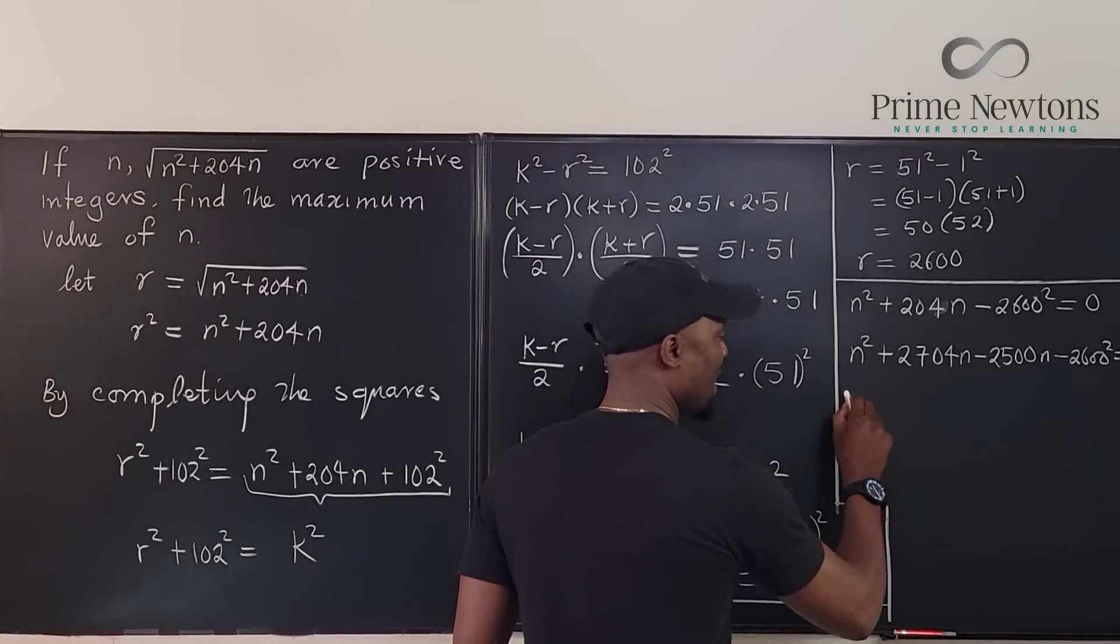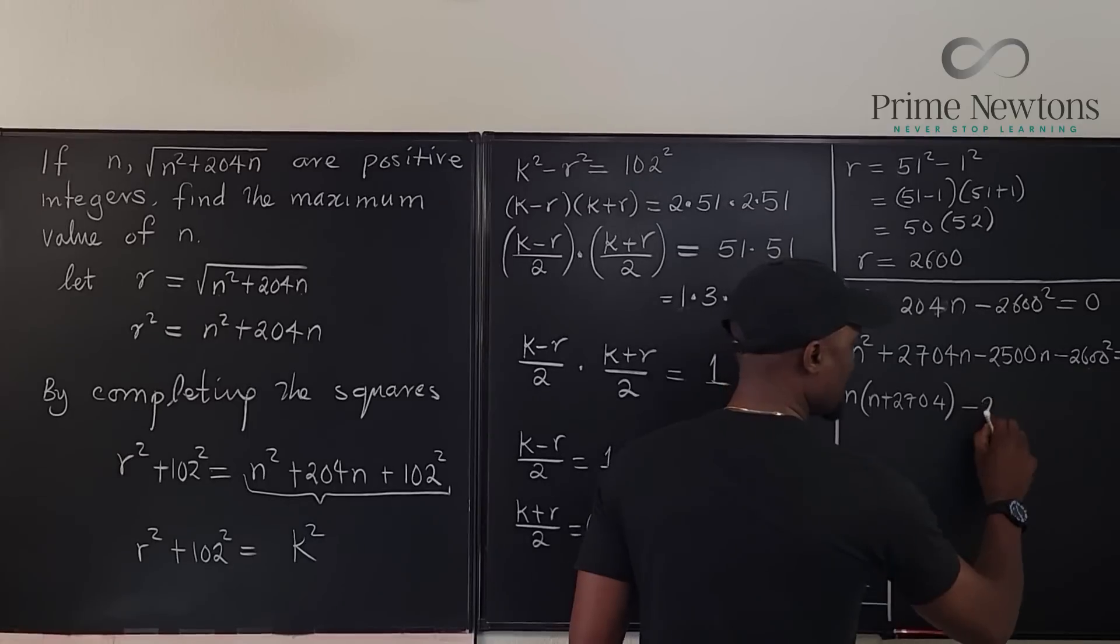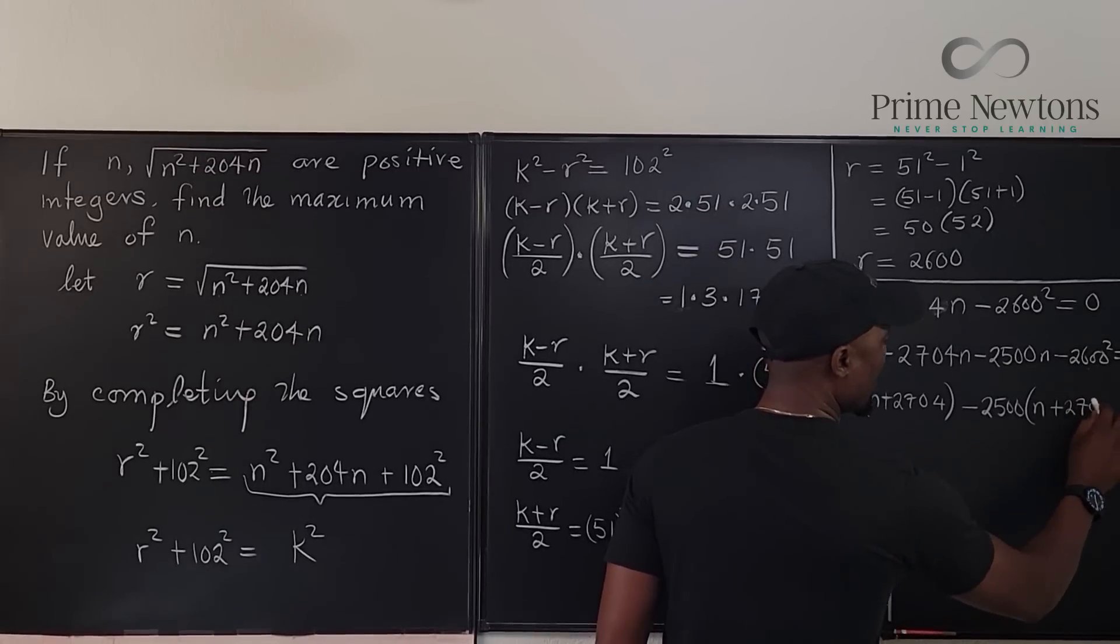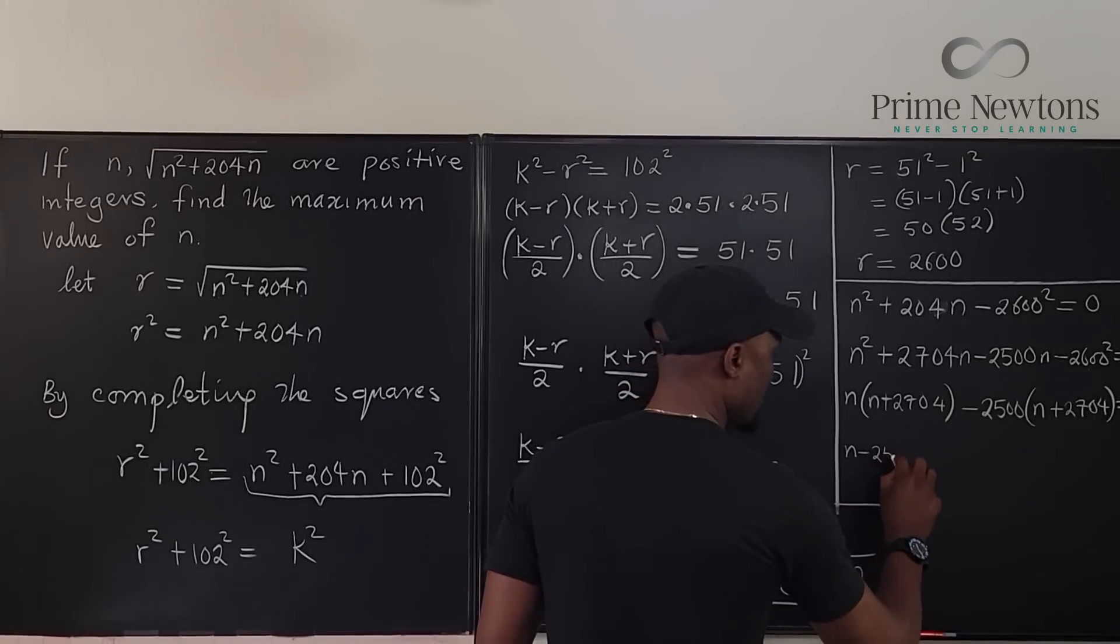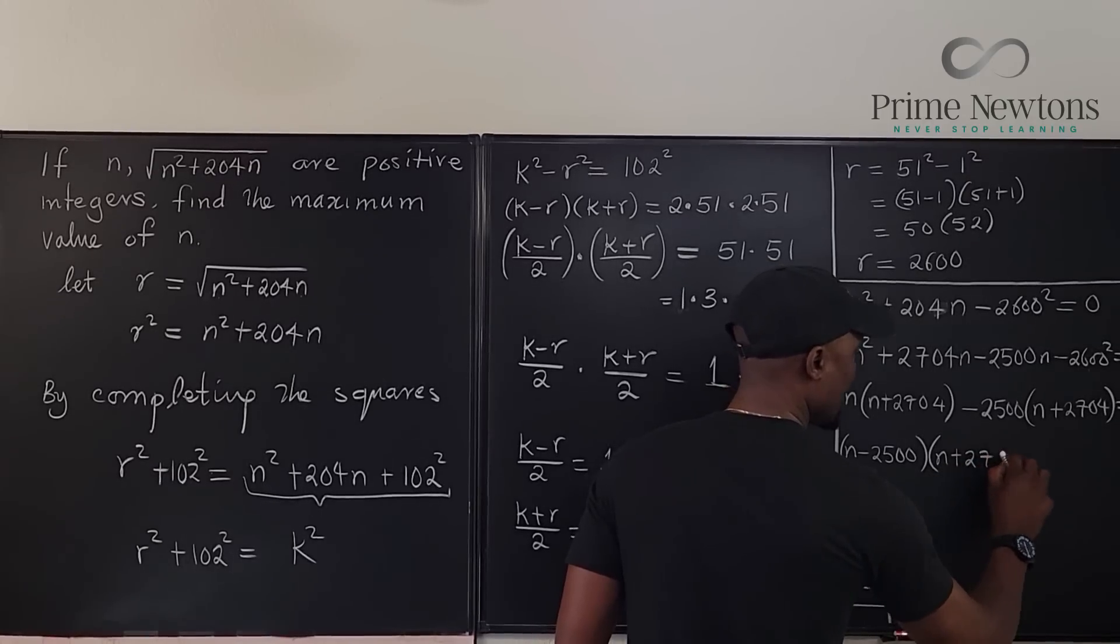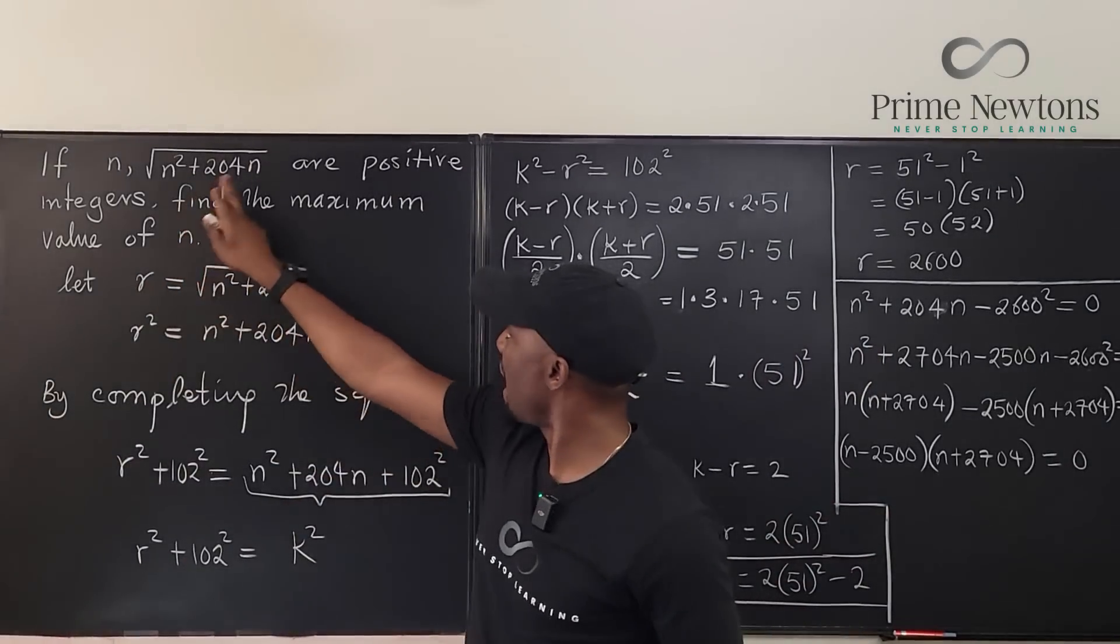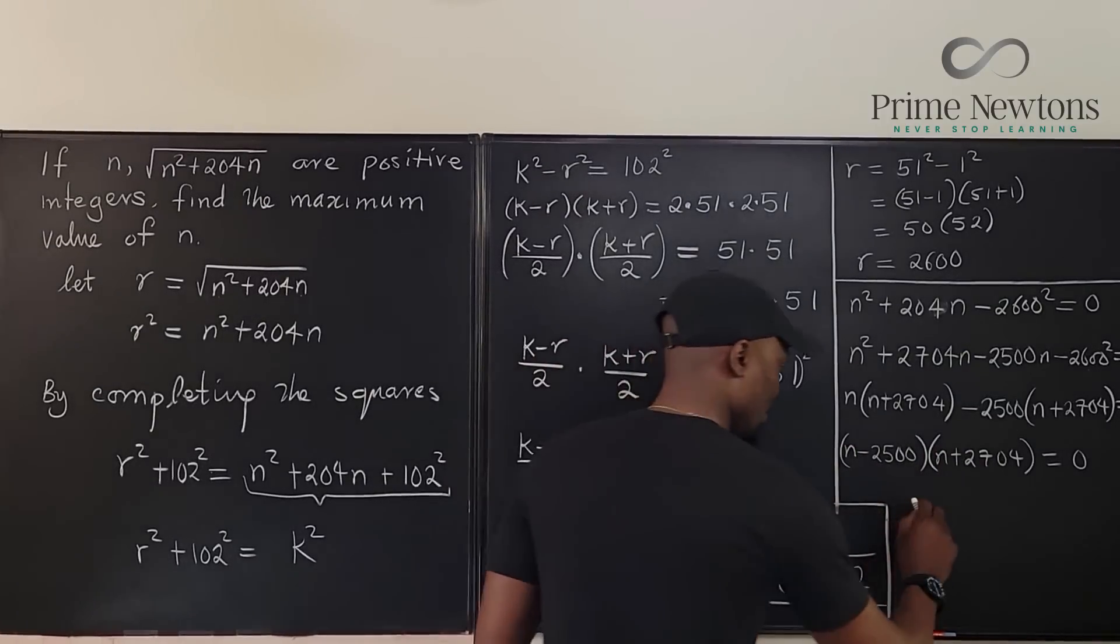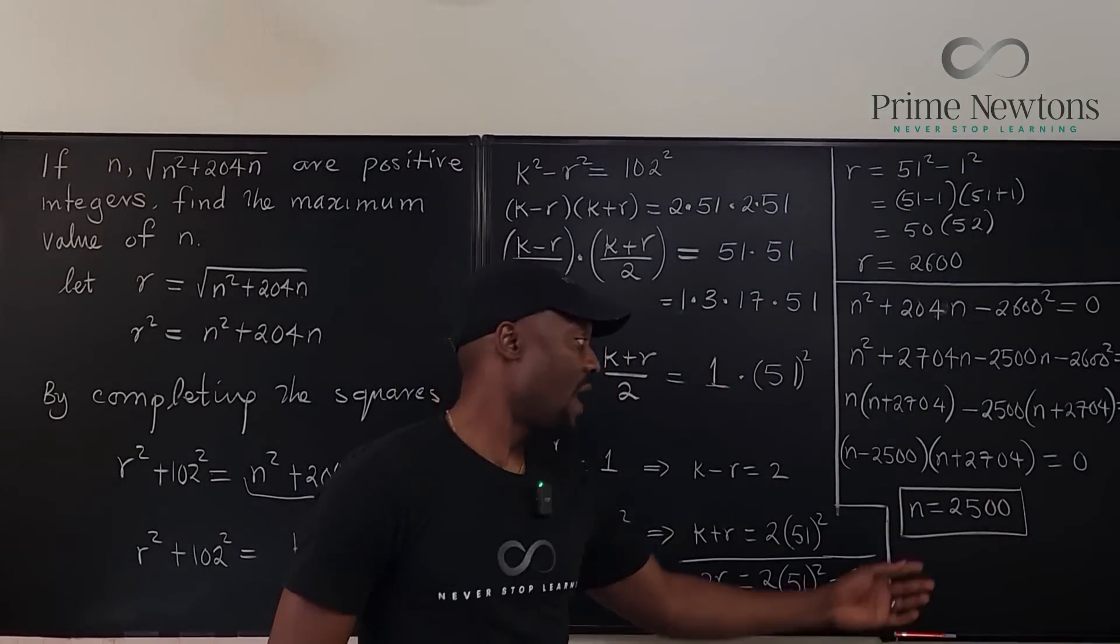Let's factor. If we factor this, we're going to get n into n plus 2704. You take out 2500 into n plus 2704 equals zero. So we know that n minus 2500 times n plus 2704 is equal to zero. And don't waste time trying to solve this because remember, the condition said that n is a positive integer. So this one will not give us positive n. This is the only one that will give us positive n. This just implies that n is 2500. And that's the answer that we've been working to find.